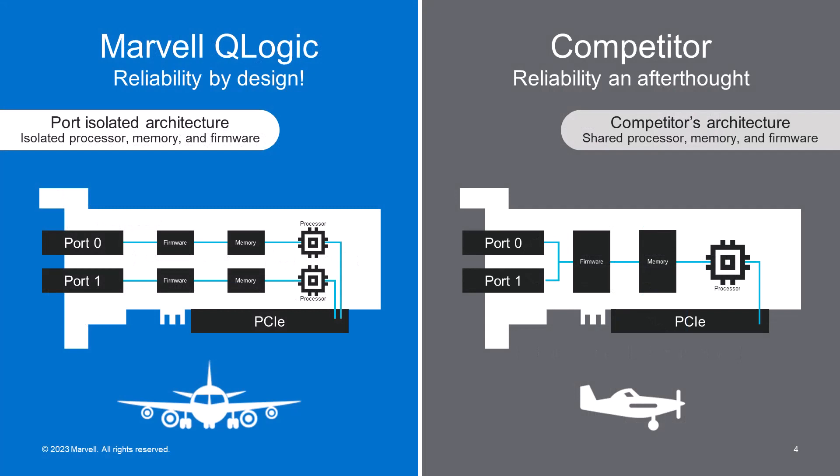Today, for the HBAs that are in the host servers, there are two major Fiber Channel suppliers with two very different design architectures. The port isolation architecture on the left, used in Marvell Q-Logic Fiber Channel HBAs, provides dedicated processor, memory, and driver resources for each and every port on the adapter. It's like flying a plane with multiple engines — if one engine fails, the others keep working.